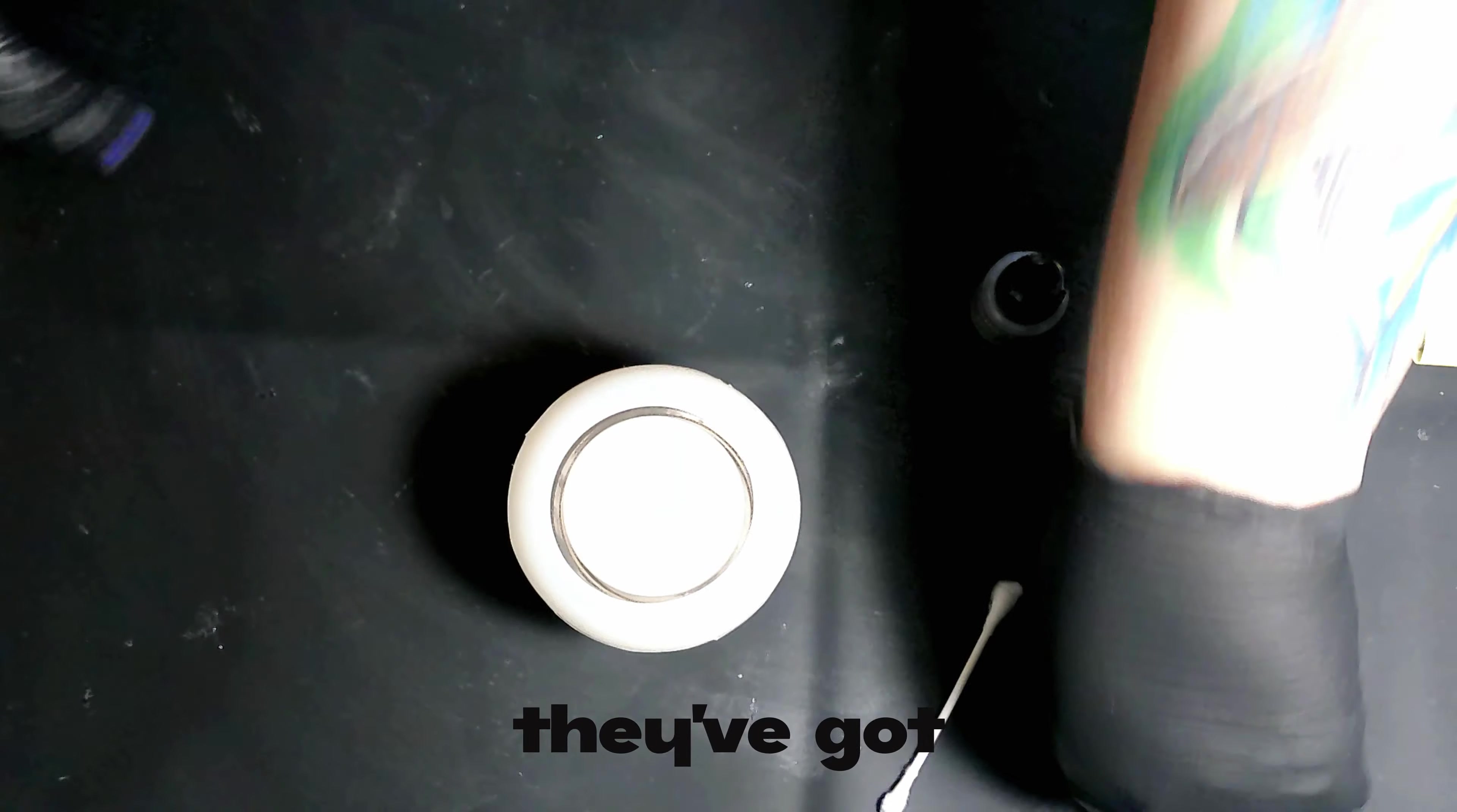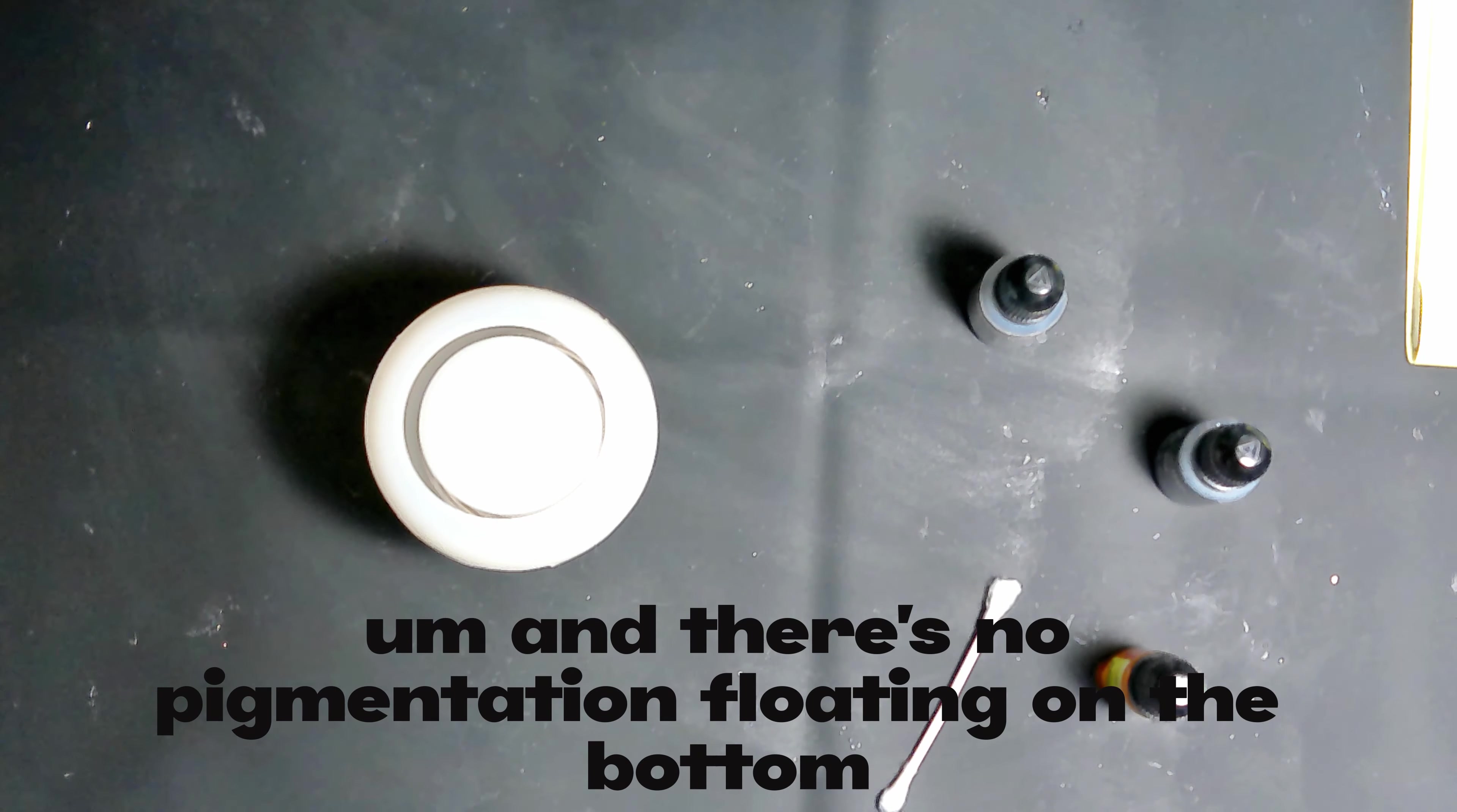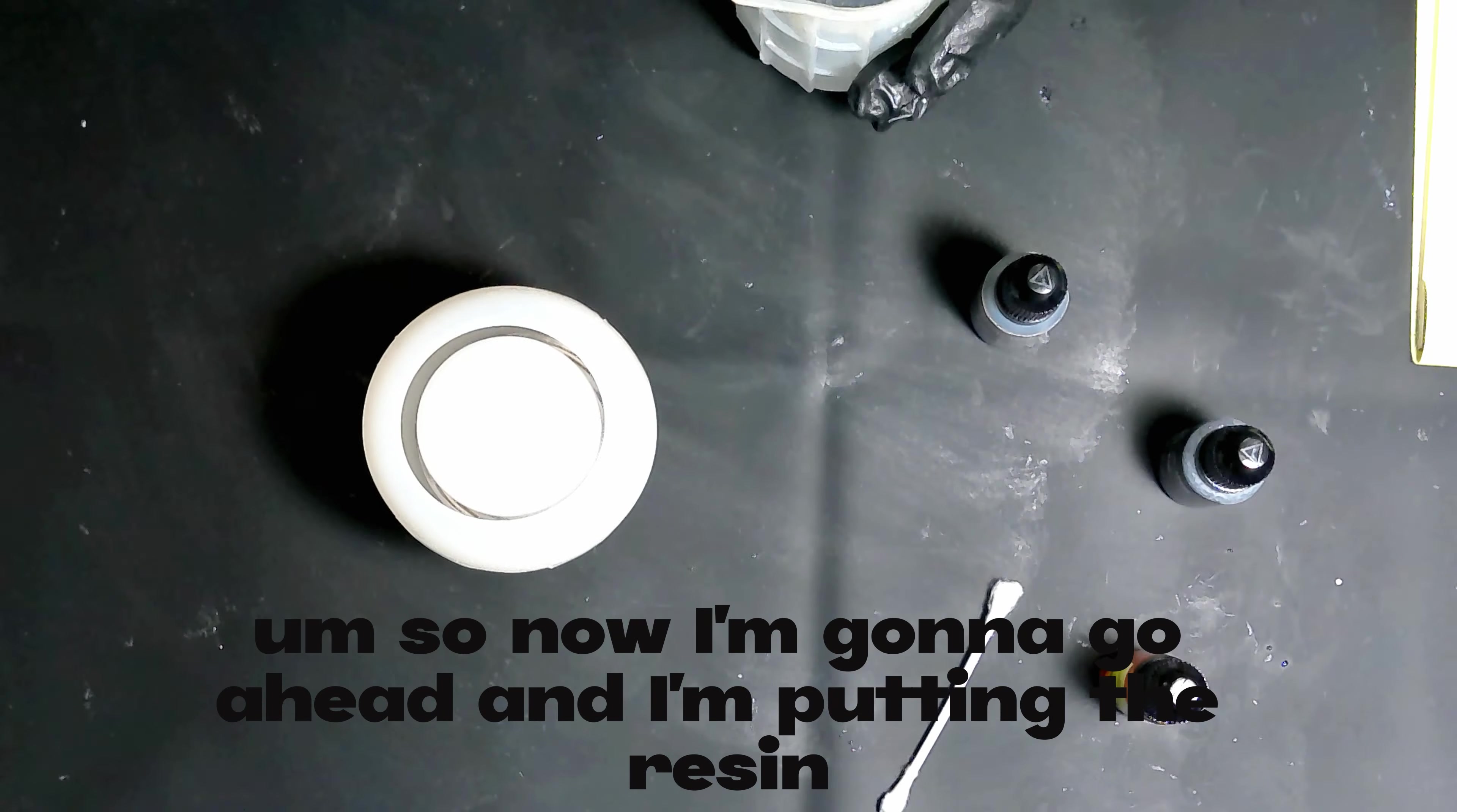They've got like the pigment in them, so you're going to want to make sure that you shake them up really, really well and there's no pigmentation floating on the bottom, kind of like you would with a sinker, a white sinker ink. So now I'm going to go ahead and I'm putting the first bit of resin in there.